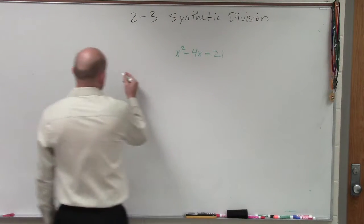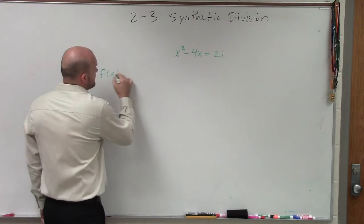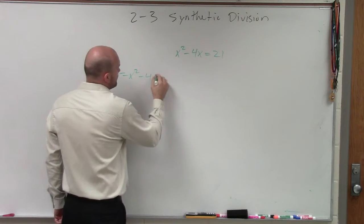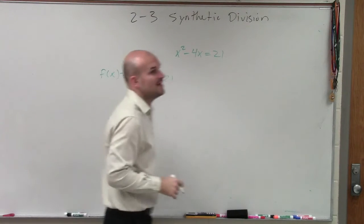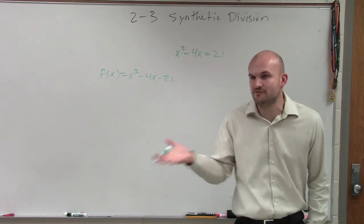So ladies and gentlemen, let's say, pretend I had a function f of x equals x squared minus 4x minus 21. If I said find the zeros, what's the first step I do?